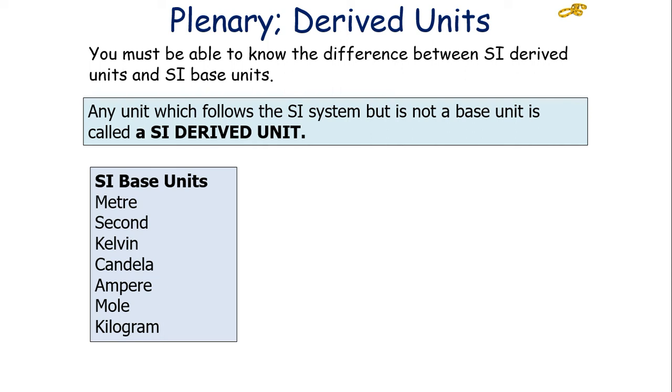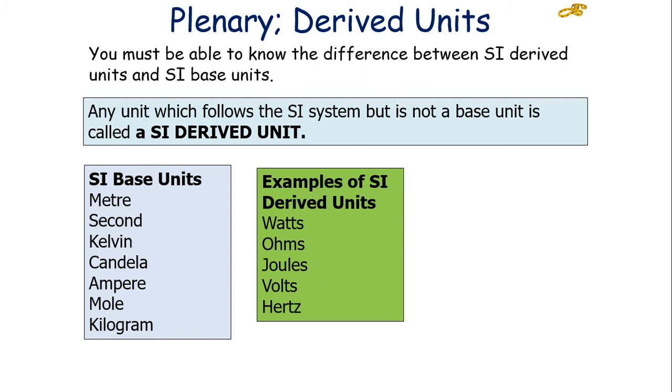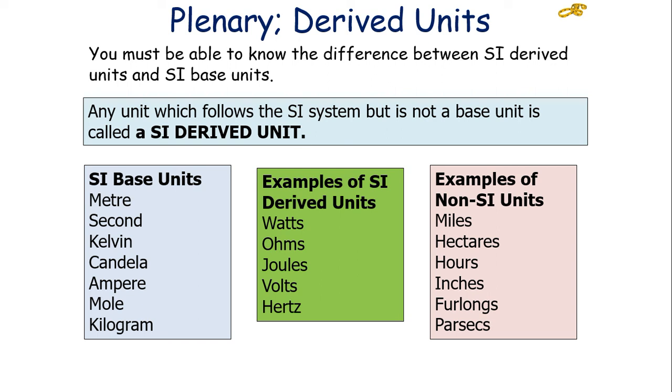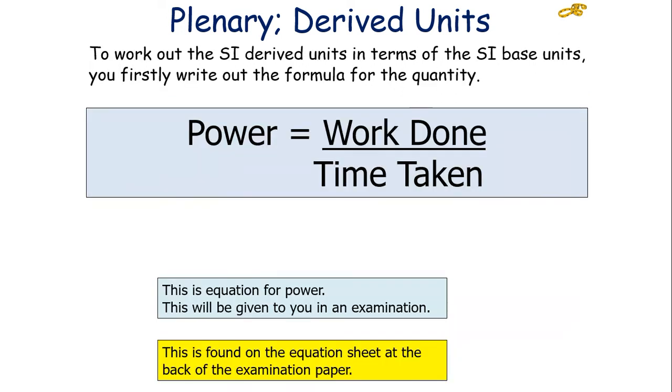Remember, our SI-base units are metres, seconds, kelvin, candela, amperes, moles, and kilograms. Examples of SI-derived units include watts, ohms, joules, volts, hertz, and examples of non-SI units could be miles, hectares, hours, inches, furlongs, parsecs. So you've got to not only be able to convert from SI to non-SI units and vice versa, you've got to be able to express SI-derived units in SI-base units.